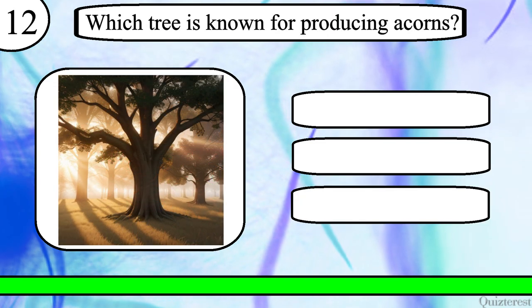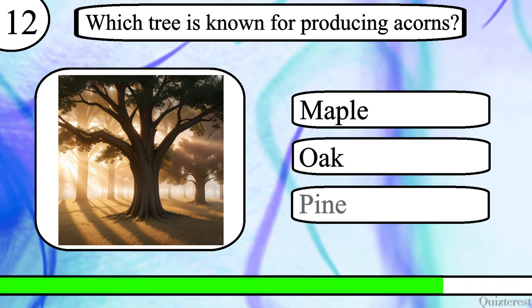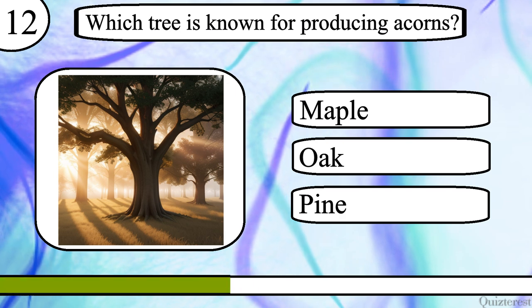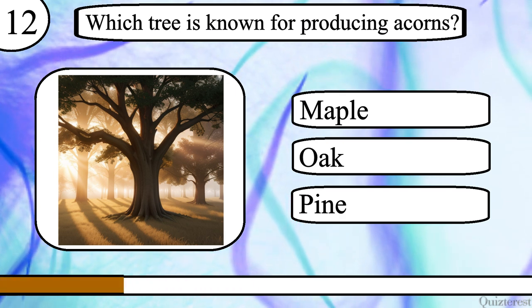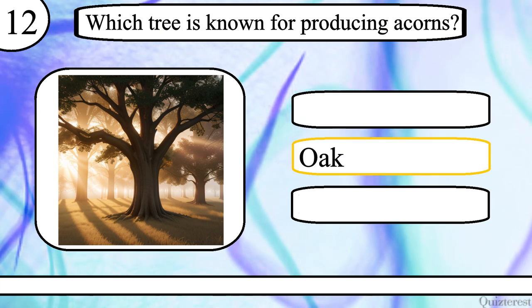Question 12. Which tree is known for producing acorns? Maple, oak or pine? The correct answer is oak.